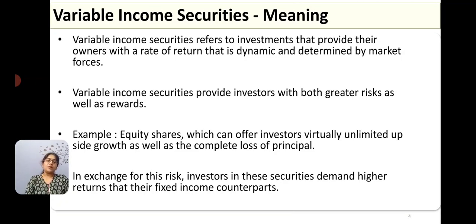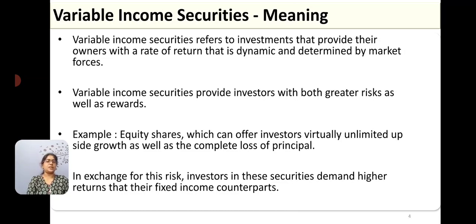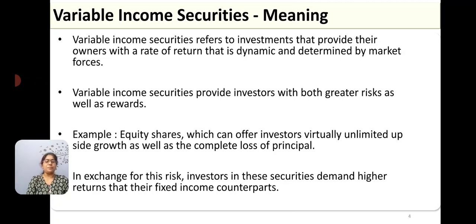Variable income securities carry a huge amount of risk and at the same time the chances of earning returns are also greater. Equity shares — also called ownership shares or ordinary shares — are the best example. In exchange for this risk, investors of these securities demand higher returns compared to their fixed income counterparts. As they carry a huge amount of risk, shareholders expect more return compared to fixed income securities.